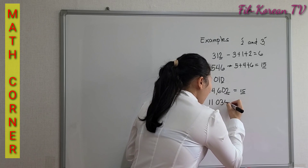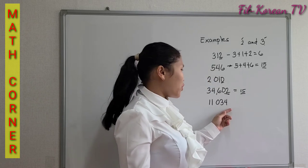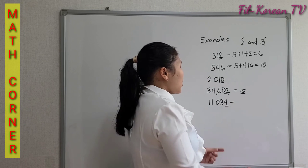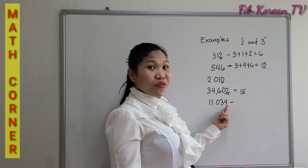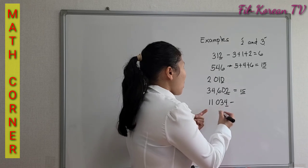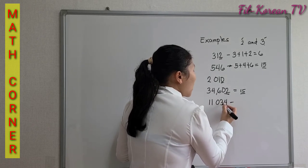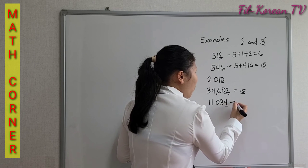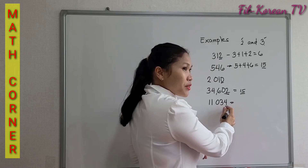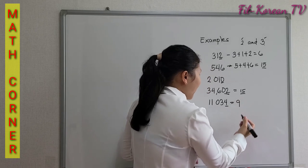11,034. It is an even number because it ends in 4. If we add the digits: 1 plus 1 plus 0 plus 3 plus 4. What is the answer? The answer is 9.